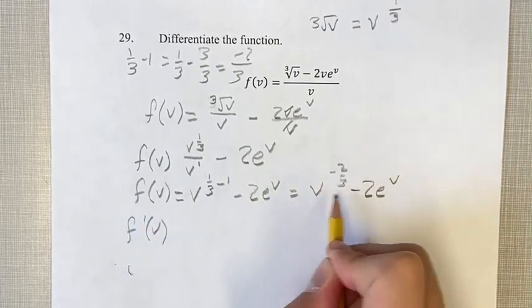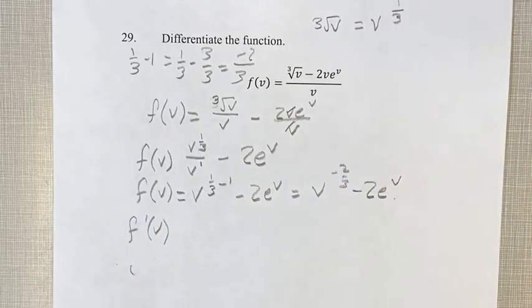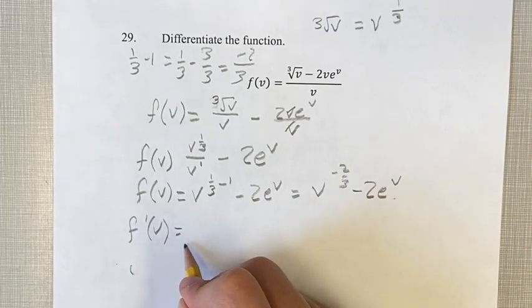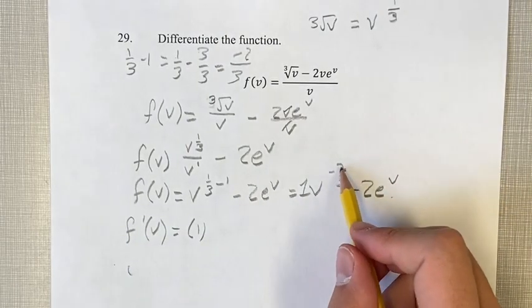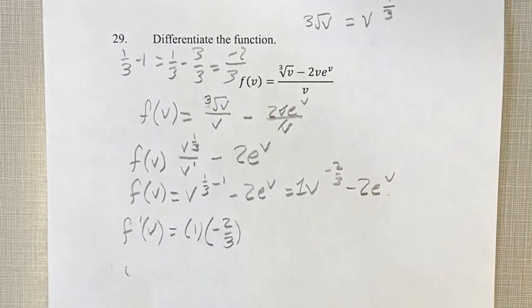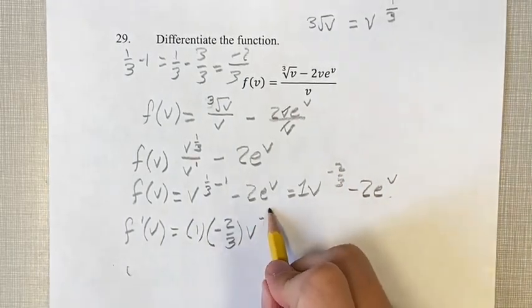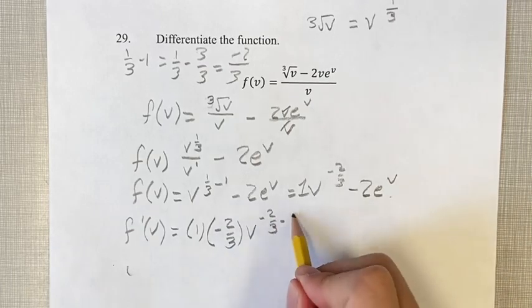So what is the derivative of this? Going step by step. This one we have a power function. So we have the coefficient, which is just 1 in this case, it's an imaginary 1. Bring down the exponent into the coefficient. Then our new exponent is negative 2 thirds, which is the old one, minus 1.